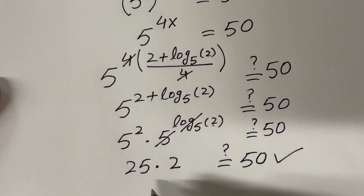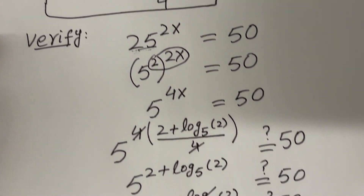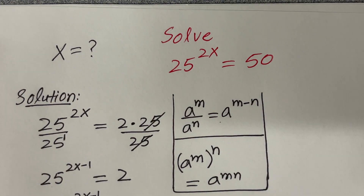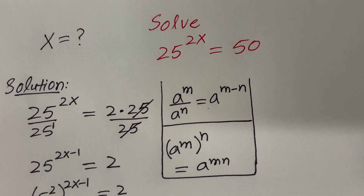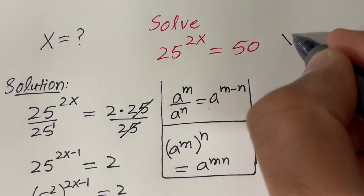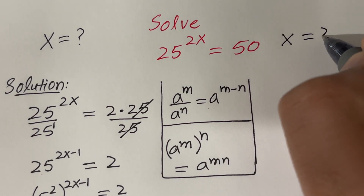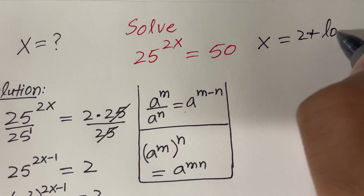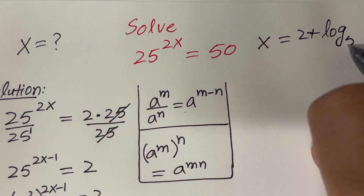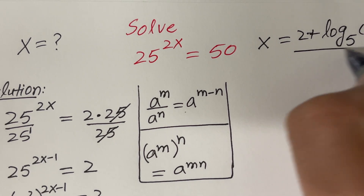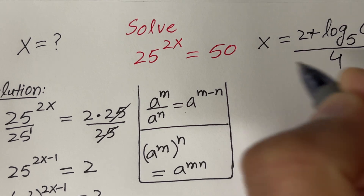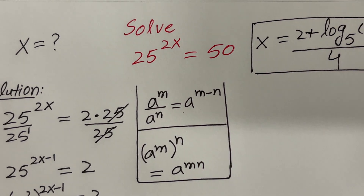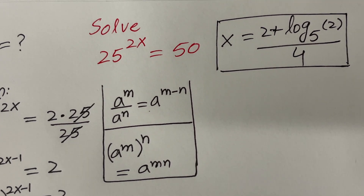The answer is yes. 25 times 2 is 50. That means this given equation has the solution x equal to 2 plus log base 5 of 2, divided by 4. This is the solution of the given equation.